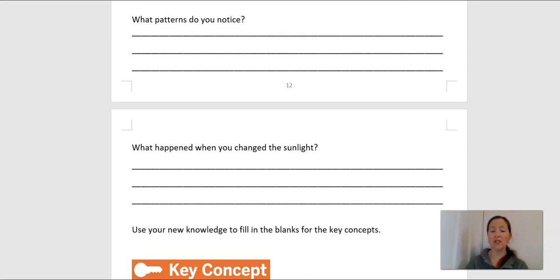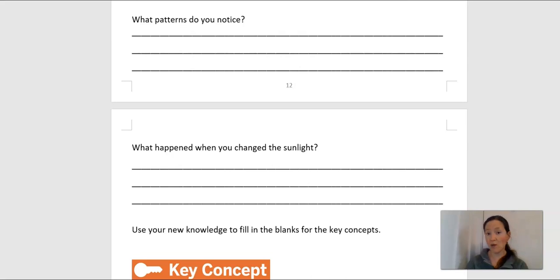What happened when I changed the sunlight? When there was a little sunlight, there was less energy, so the temperature was lower. So when we turned the sunlight way up — the temperature went up and we got more energy.